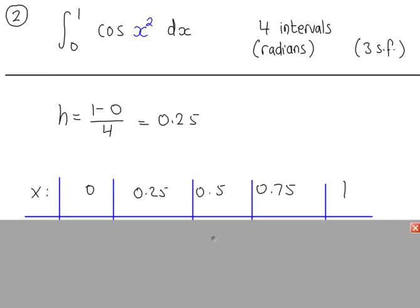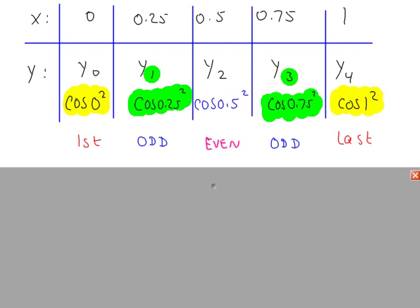Up to x equals one. The y values have been worked out. Some of these y values you can work out the exact value and write it here, but it's better to use the full value rather than a rounded value in the Simpson's rule formula.